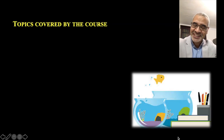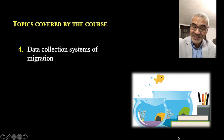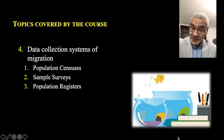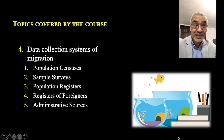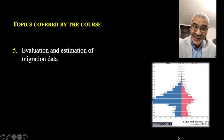The fourth topic will be data collection systems of migration. We have six main data collection systems: population census, household surveys, population registers, registers for foreigners, administrative data sources for migration, and border statistics. The fifth topic will be evaluation and estimation of migration data.